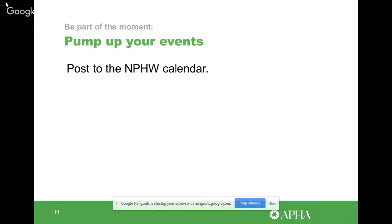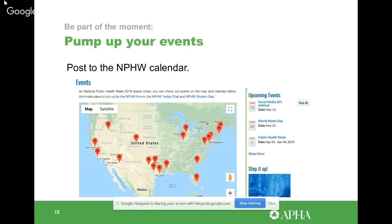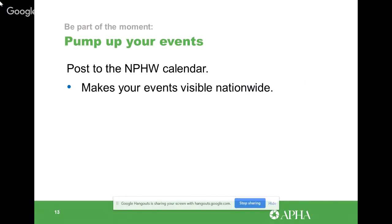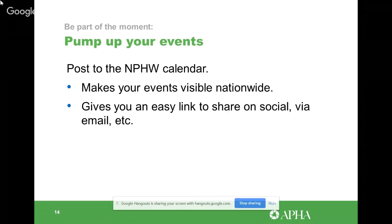Make sure you post to the National Public Health Week calendar at nphw.org. You can view events on a map and there's also a chronological list — when you click on the markers you'll see each event pop up. This ensures everyone around the country knows you're participating in National Public Health Week and gets your events seen on a wide scale. It also gives you an easy link to include in your social media posts and emails to potential partners.